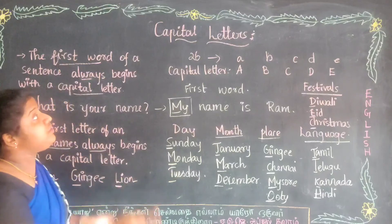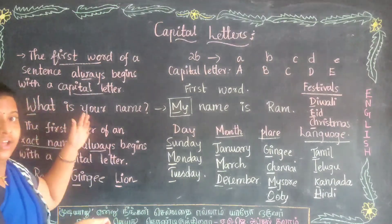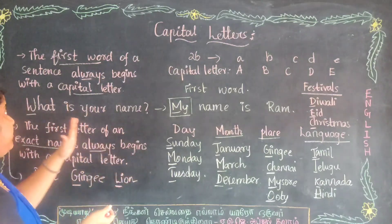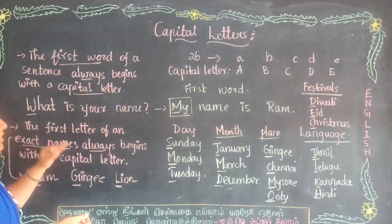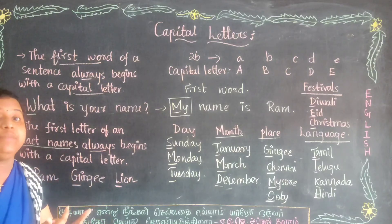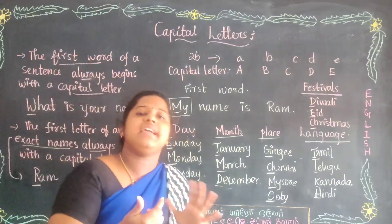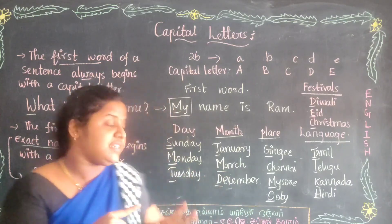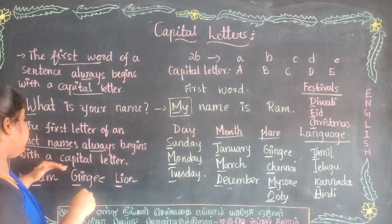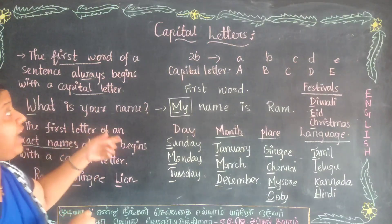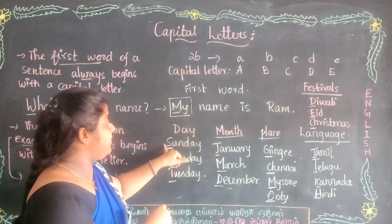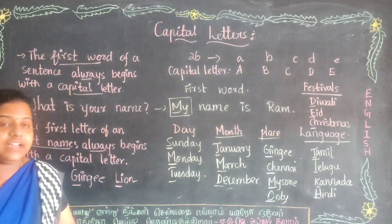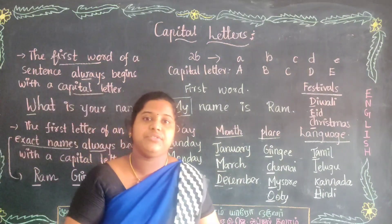Have you understood the uses of capital letters? We use capital letters for: the first word of a sentence, the first letter of exact names — names of particular persons, places, animals, or things — and for days, months, places, languages, and festivals. Clear with that. See you in the next video. Thank you.